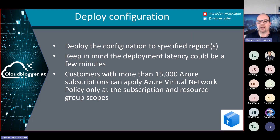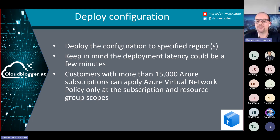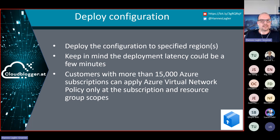When deploying a configuration, you define the target regions within the scope. Keep in mind the implementation takes only a few seconds, not minutes — currently around five seconds. There is one notable limitation: if you have a customer with more than 50,000 Azure subscriptions, you can only apply Azure Virtual Network Manager at the subscription or resource group scope level. But I don't have a customer with more than 15,000 subscriptions, so this is rarely a concern. Enough theory — let's go to the live session.